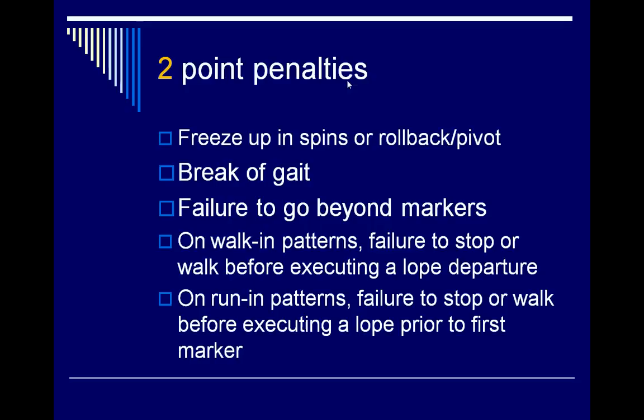Moving on to two-point penalties: if they freeze in a spin or a rollback — for example, they're in a spin and don't complete it but go ahead and get it done, or they kind of half stop — that is a two-point freeze penalty. A break of gait is also a two-point penalty; since there is no trot in reining, if they're running circles and break to a trot while supposed to be loping, that's a two-point penalty.